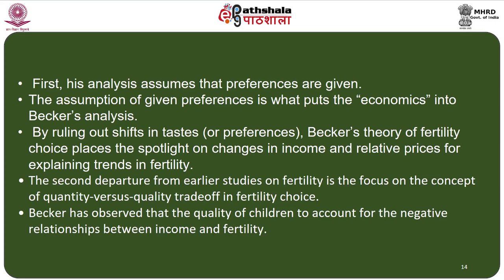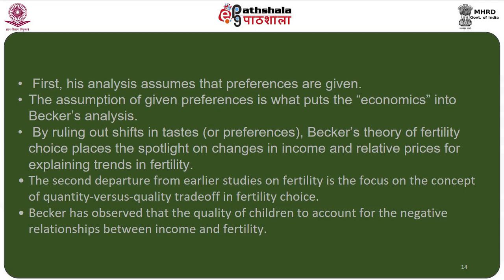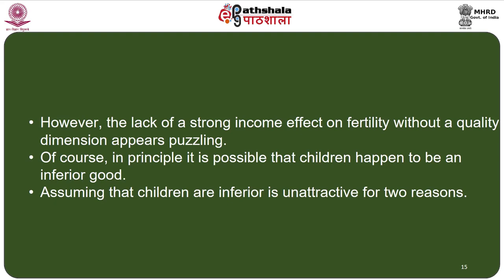By ruling out shifts in tastes or preferences, Becker's theory of fertility choice places the spotlight on changes in income and relative prices for explaining trends in fertility. The second departure from earlier studies is the focus on the concept of the quantity versus quality trade-off in fertility choice. Becker observed that child quality accounts for the negative relationship between income and fertility, though the lack of a strong income effect on fertility without a quality dimension appears puzzling.